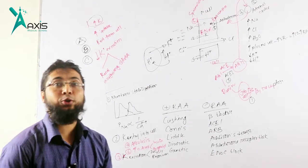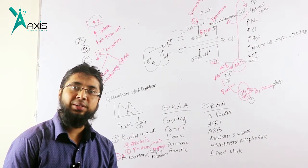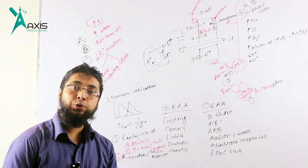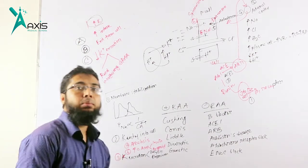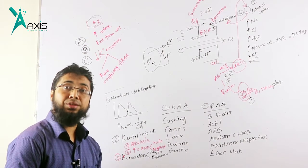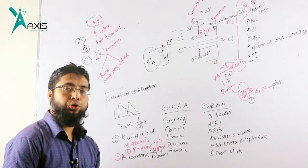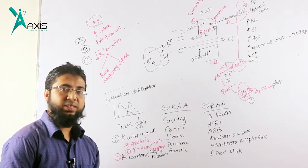As-salamu alaikum, welcome to Axis Medical School's Critical Care Series lecture on approach to hyperkalemia. Normal potassium concentration in plasma is 3.5 to 4.5 millimol per litre.